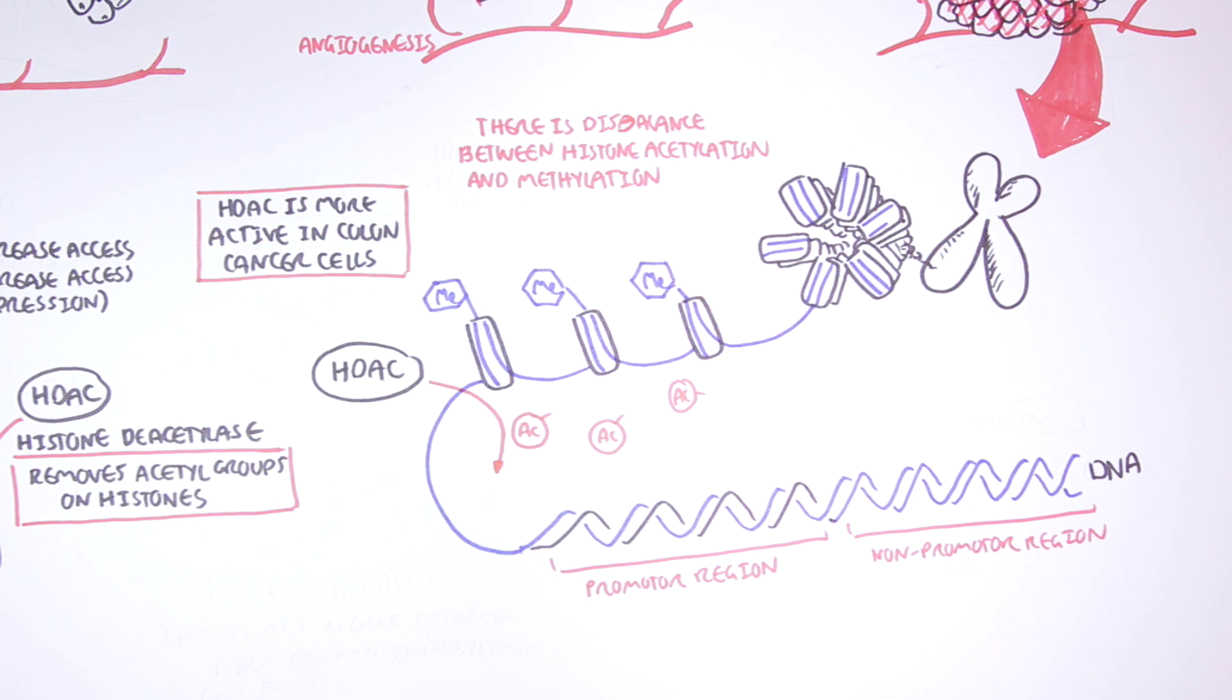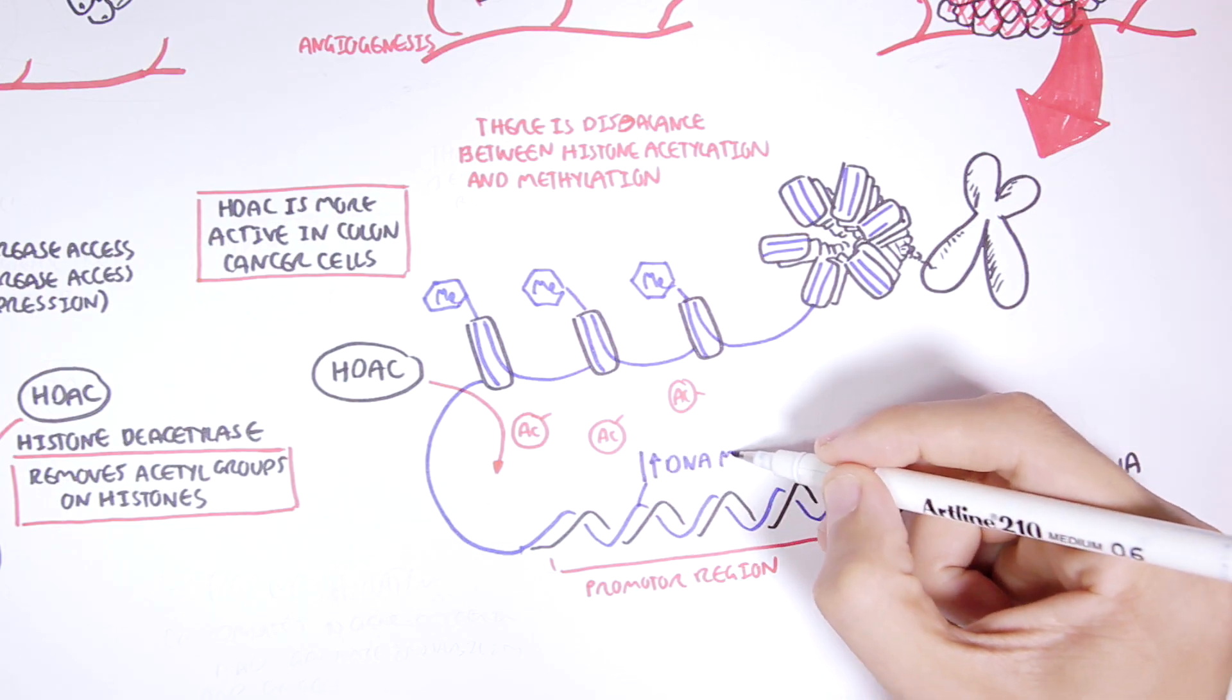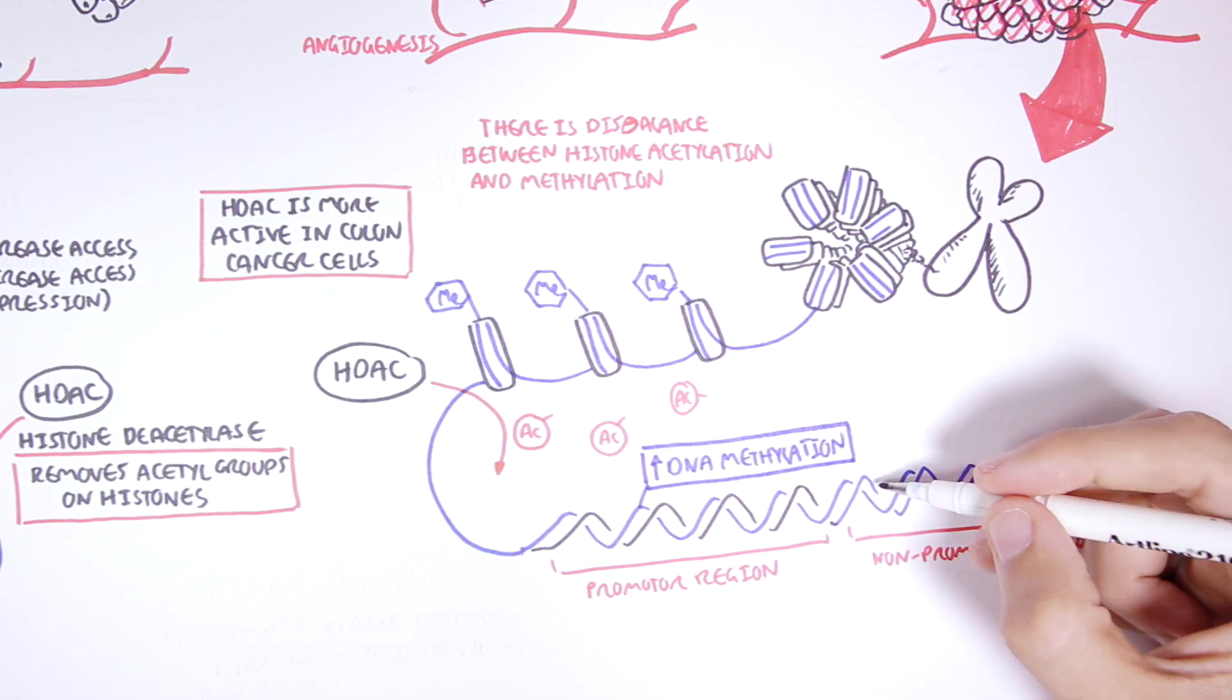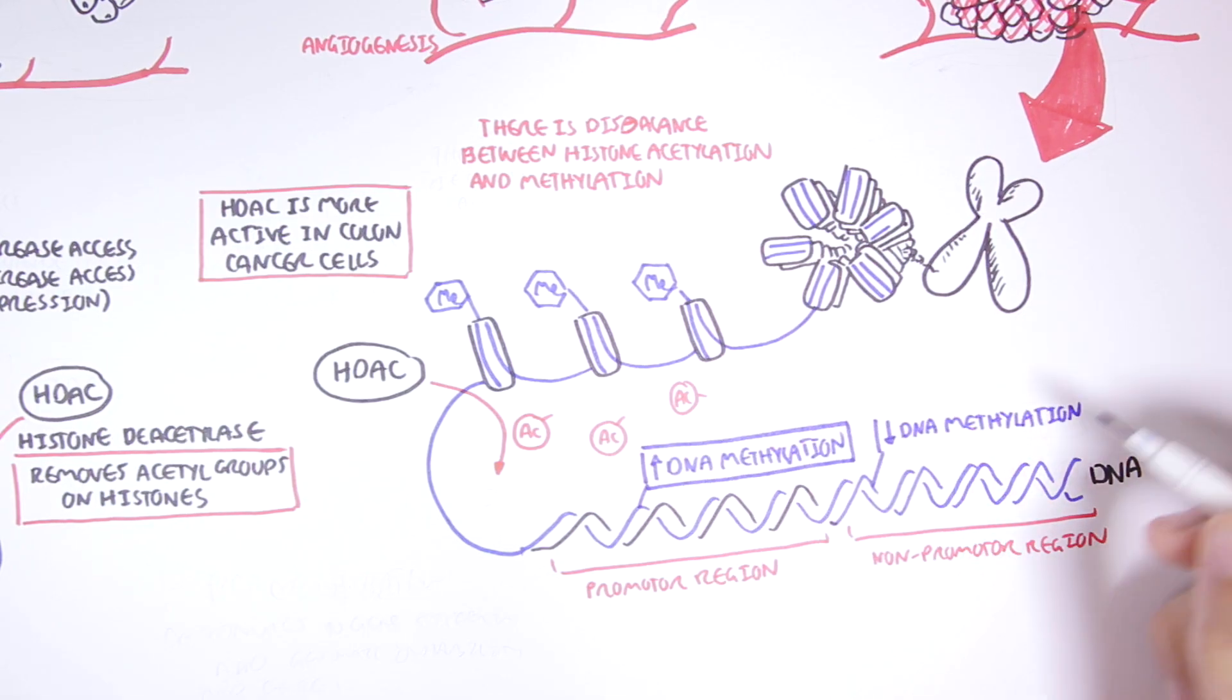In colon cancer cells, we also see changes in DNA methylation. In promoter regions, for example, there is usually hypermethylation, particularly in tumor suppressor genes and DNA repair genes. This results in some of the mutations we talked about earlier.